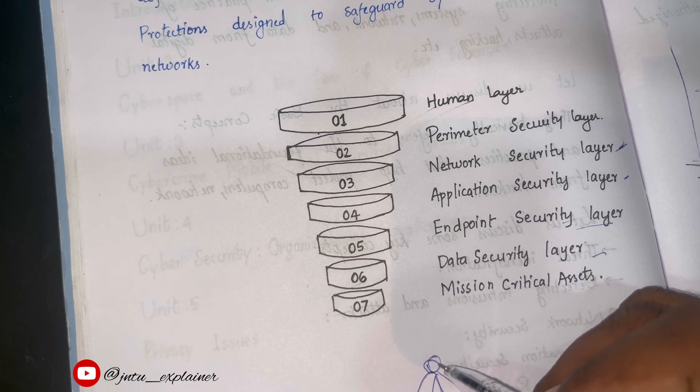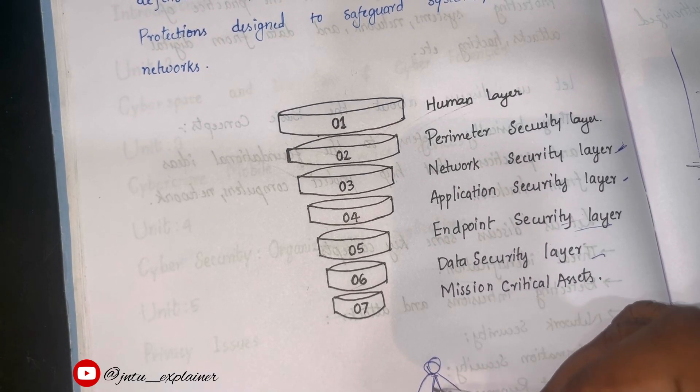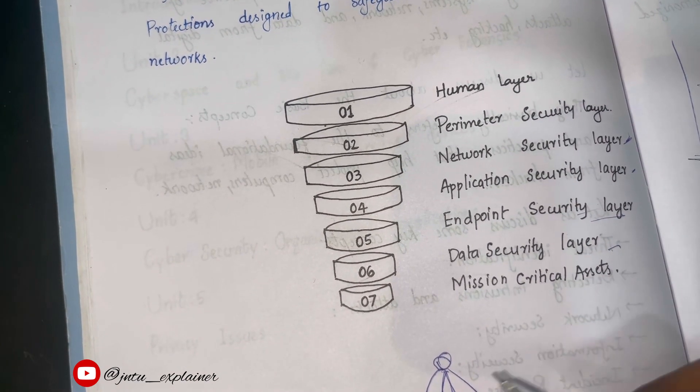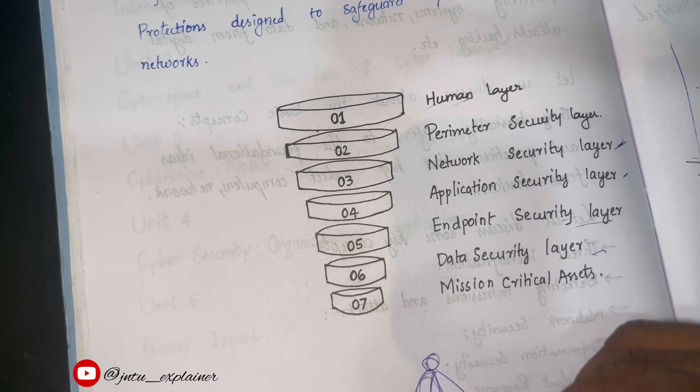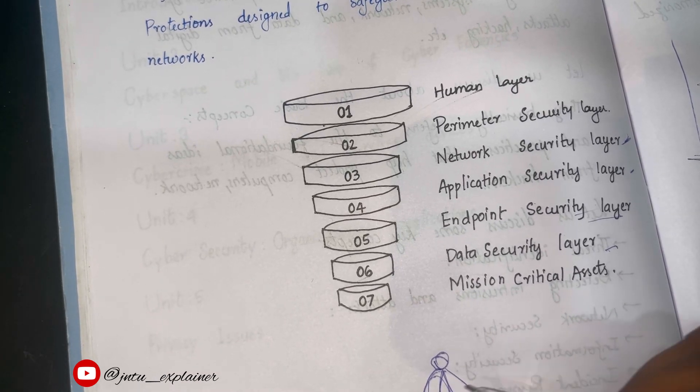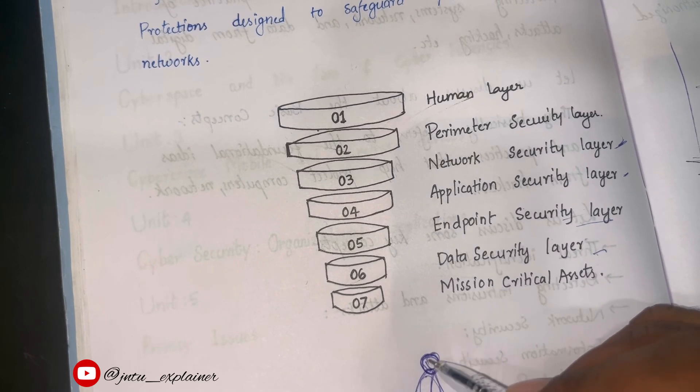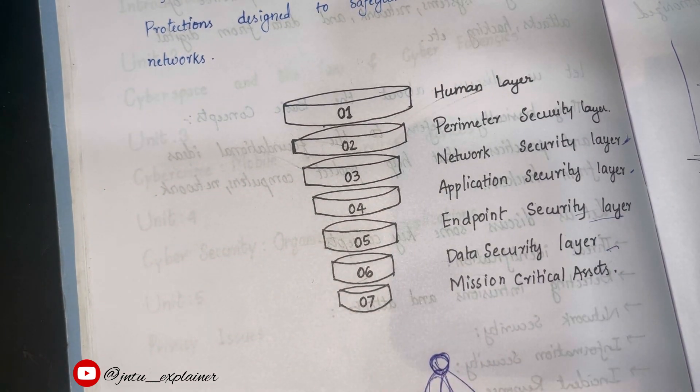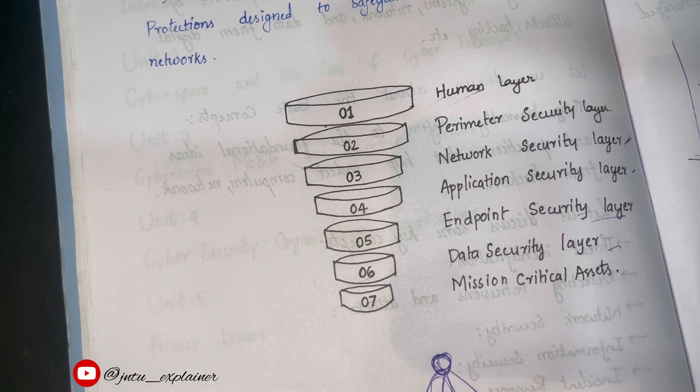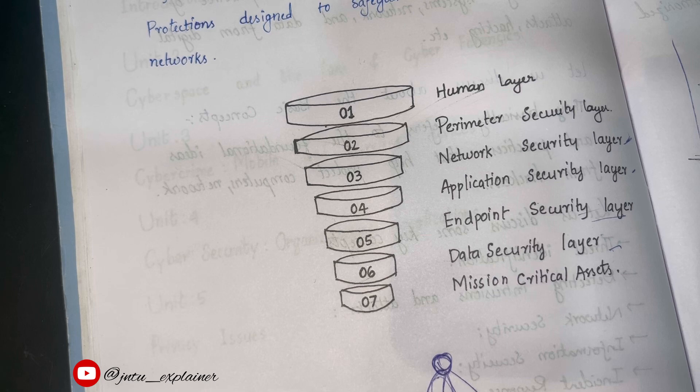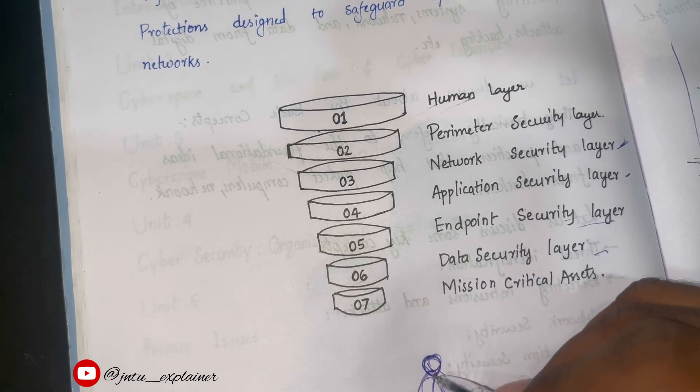When the endpoint security layer is protecting these devices, the data security layer protects the data present in that device or protects the data which is present in the network. It protects the data which is present in the entire network, entire devices.